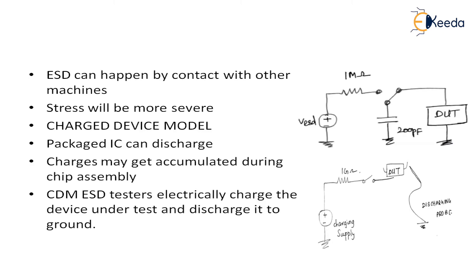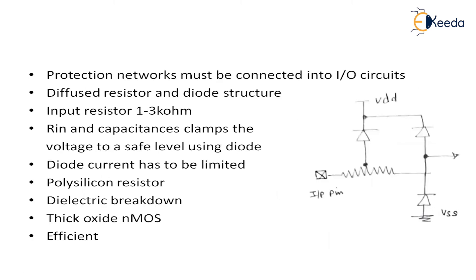These are the various ESD models, and protection networks must be connected into your IO circuits. One of the circuits for protecting my IO circuits is a diffused resistor and a diode structure. The input resistor used here is one to three kilo ohms. The input resistance and capacitance are going to clamp my voltage to a safe level.